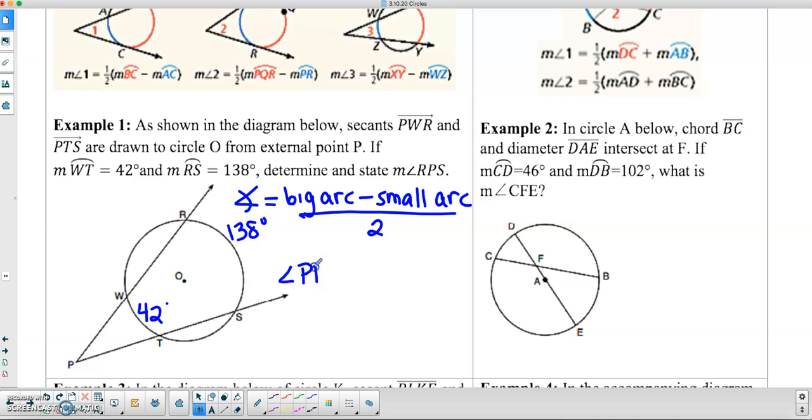So in this case, angle RPS is going to equal the big arc, which is RS, minus the small arc, which is WT, and then divide that by 2. So we're going to substitute in 138 minus 42, and divide that all by 2. Well, 138 minus 42 is 96, and then 96 divided by 2 is 48 degrees.